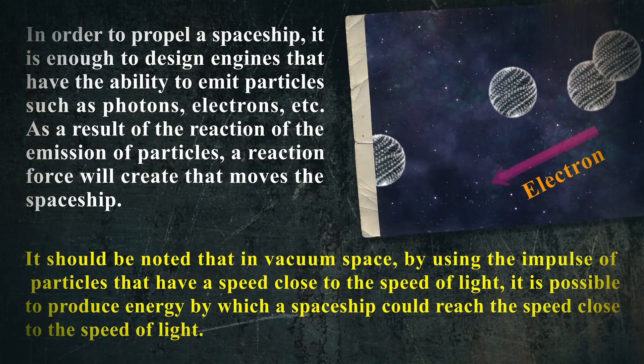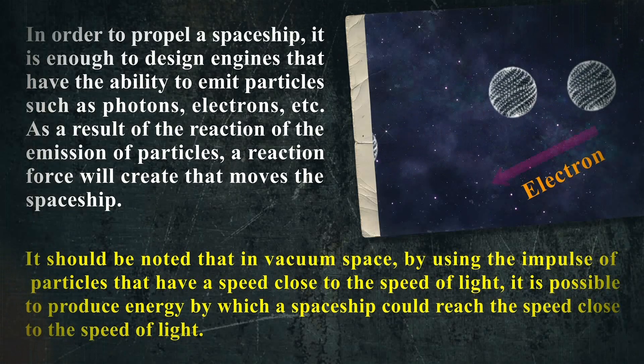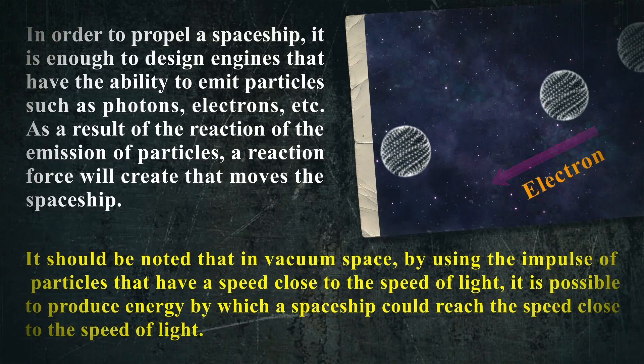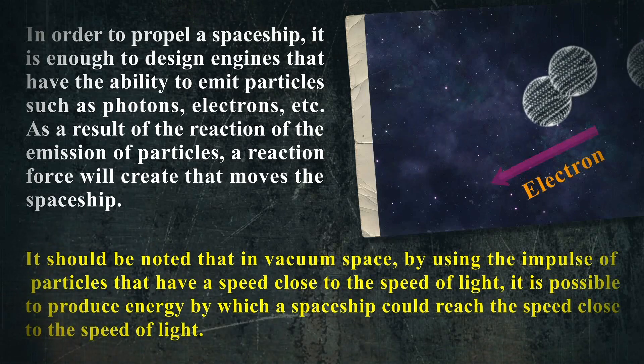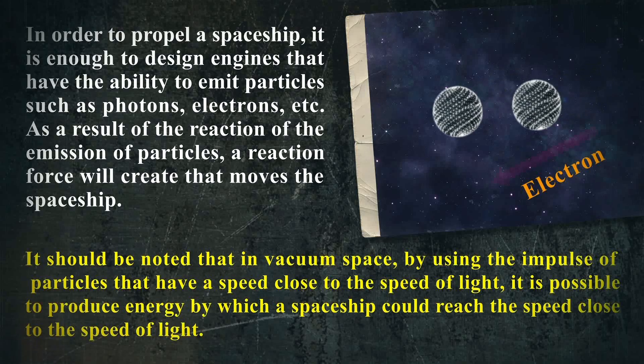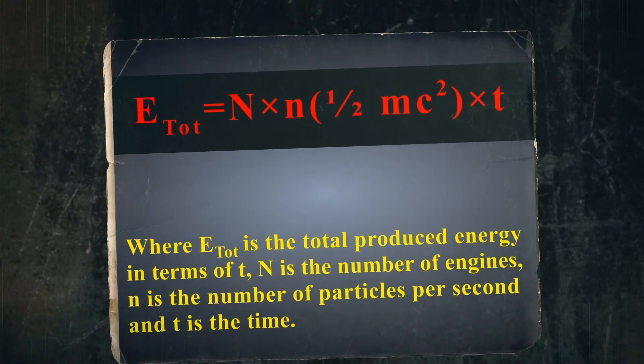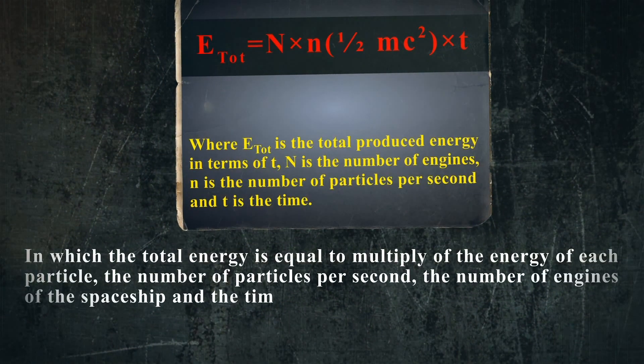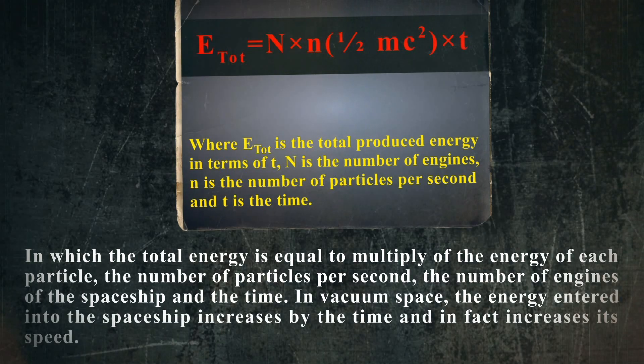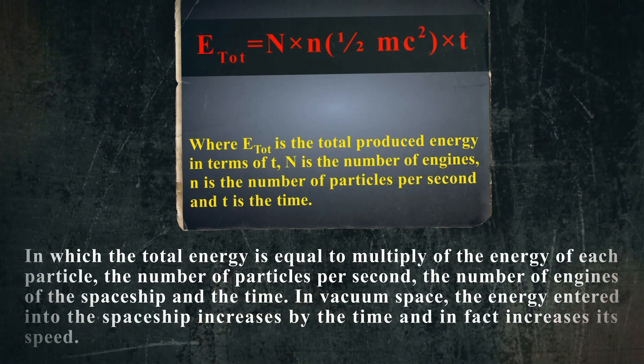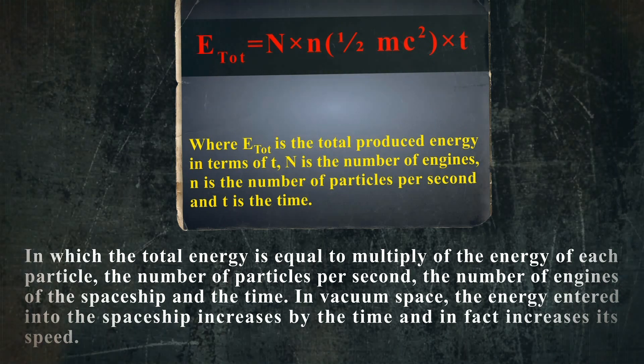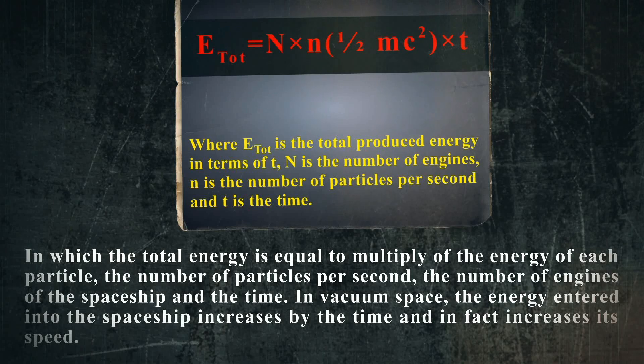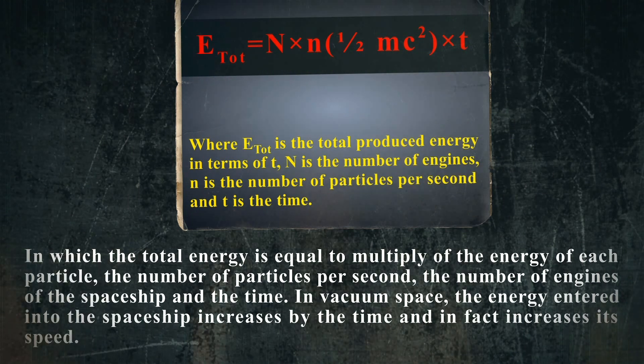Where E_total is the total produced energy in terms of t, N is the number of engines, n is the number of particles per second, and t is the time. The total energy is equal to the multiply of the energy of each particle, the number of particles per second, the number of engines of the spaceship, and the time. In vacuum space, the energy entered into the spaceship increases by the time and in fact increases its speed.